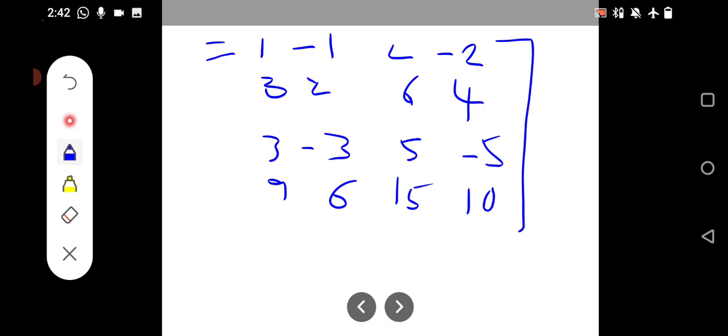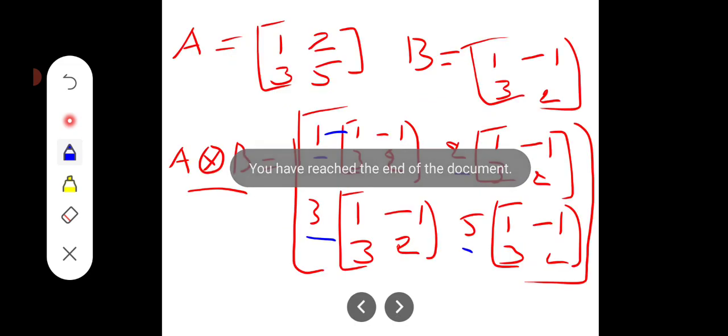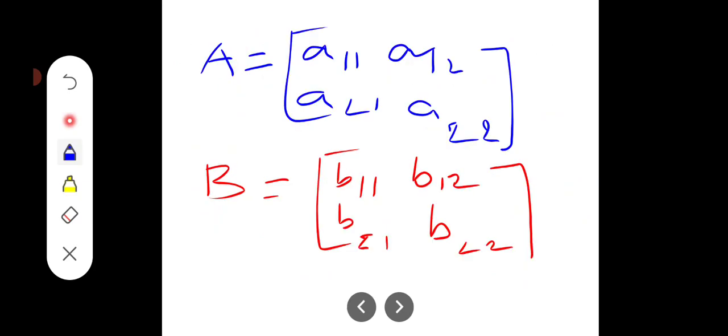So this is the Kronecker product of two matrices. Finally, we will get a 4 by 4 matrix. This is one of the university questions for two marks. Thank you for watching GMK Tutorials, thank you.